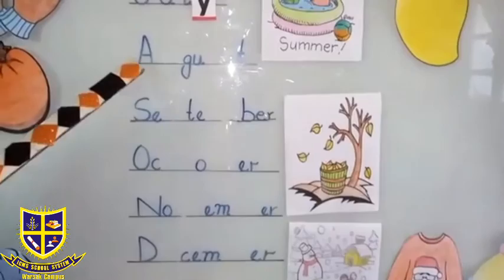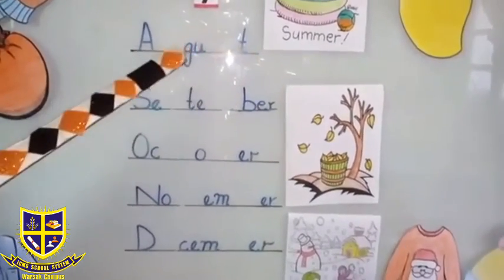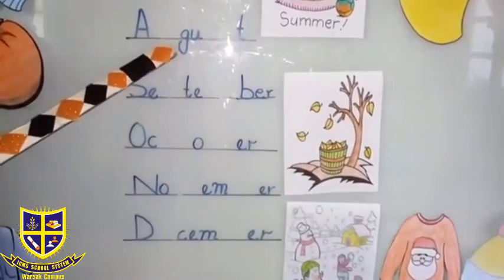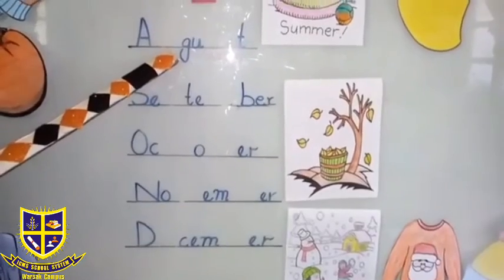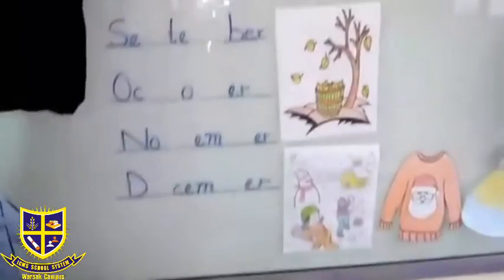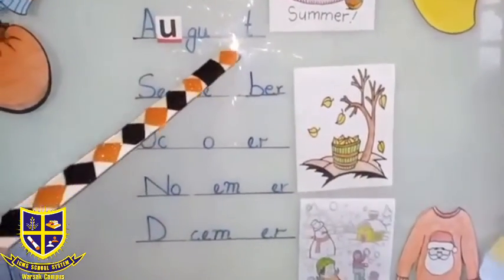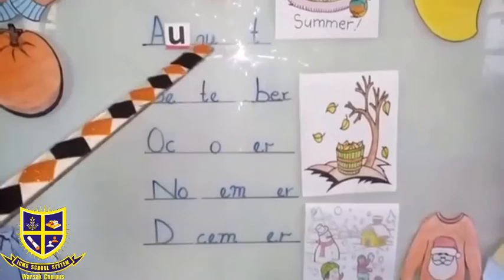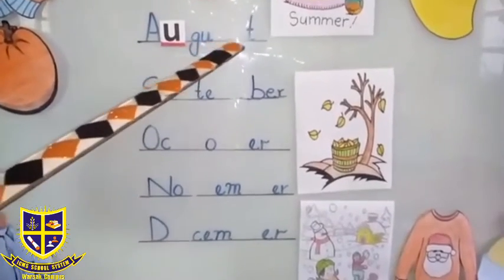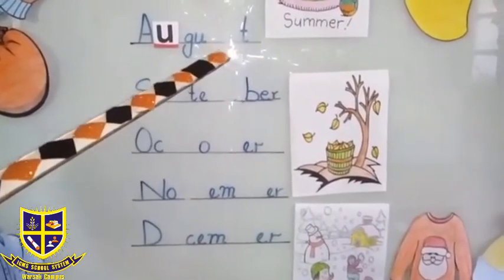Next is August. In August, U is missing — U. August. August. August — S is also there.